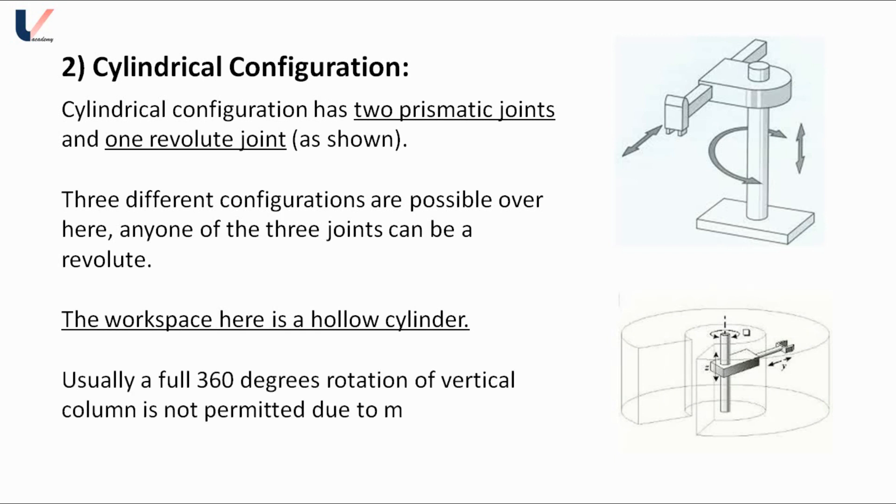Due to mechanical restrictions, generally it is not possible to rotate the vertical column to full 360 degrees because of the presence of actuators or transmission elements. Usually a full 360 degree rotation of the vertical column is not permitted. Moving further, the third configuration is polar configuration.